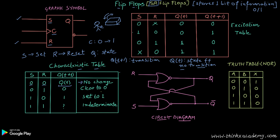You will understand how the flip-flop maintains a state of zero or one even when no input is provided when we look at the circuit diagram. In computer science, you are only concerned with the graphic symbol, the characteristic table, and the excitation table. When an SR flip-flop has a clock, it is called an SR flip-flop; when there is no clock, it is known as an SR latch.